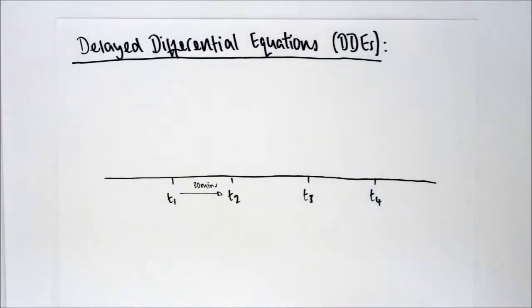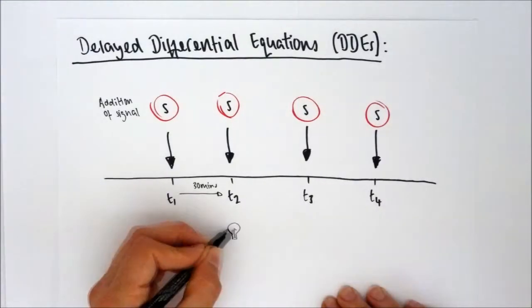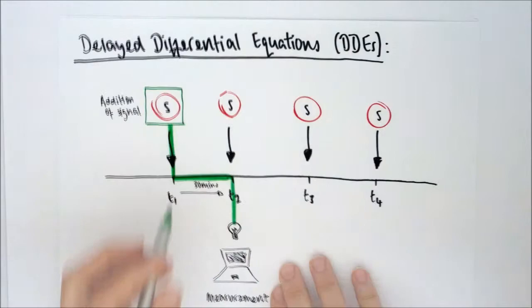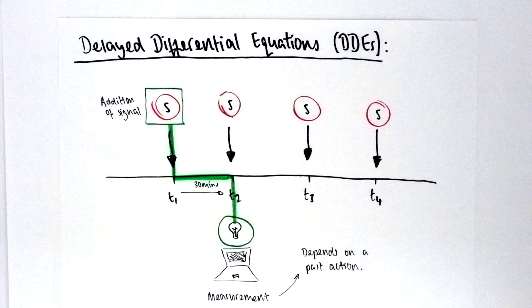Here, we add a signal to our system every 30 minutes. When we take a measurement at t2, we see a response to the signal, but it is a response to the signal added 30 minutes before, at t1. This is due to the reaction delay.